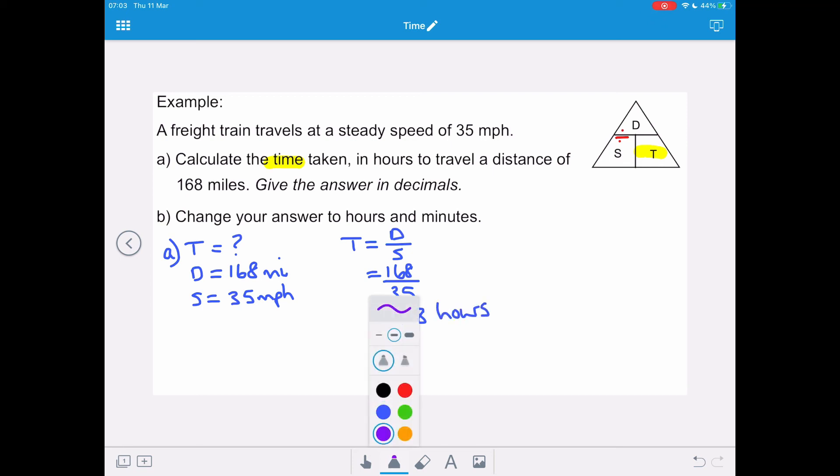Now for part b we want to change our answer to hours and minutes. So we've got 4.8 hours. We need to separate the whole hours from the decimal. So we've got 4 hours and then we're going to be adding on 0.8 multiplied by 60 minutes. So if we put that into our calculator using BODMAS we have 4 hours and 48 minutes.